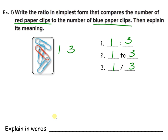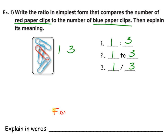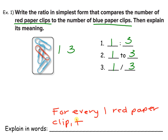What does all of this mean? What does one colon three mean when you're talking about this picture? It means for every one red paperclip, there are three blue paperclips.